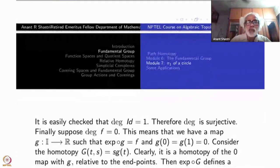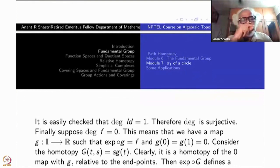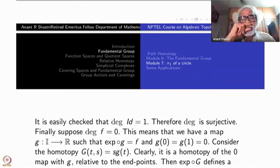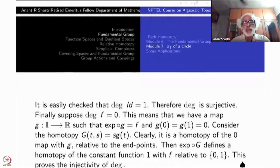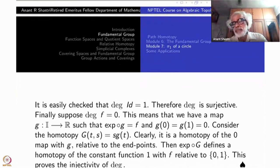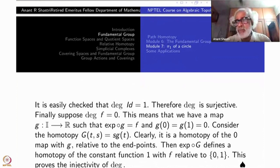Therefore there is a homotopy of G to the constant path, namely G_s(t) = s times G(t). Because either end point is 0, I do not have to add anything. So this is a homotopy of the zero map with G relative to the end points — it is a path homotopy. If you take exponential of this homotopy, that will give you the homotopy of the constant function 1 with the original loop F. Because the original homotopy G is relative — fixing s equals 0 and 1 — exponential of that path is fixed at 0 and 1, so this is a path homotopy.